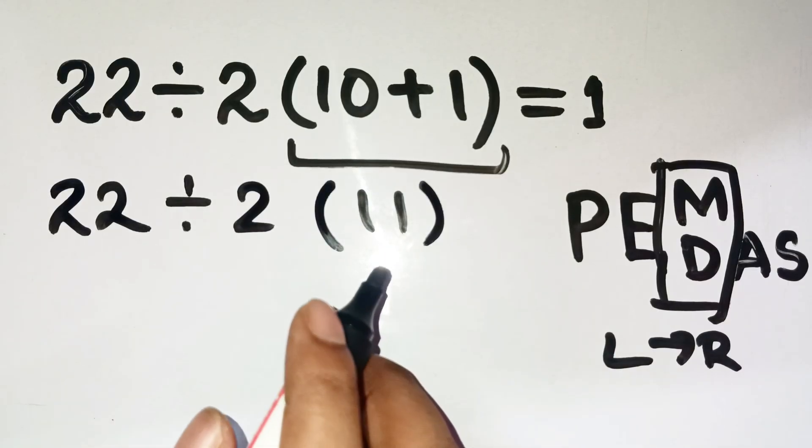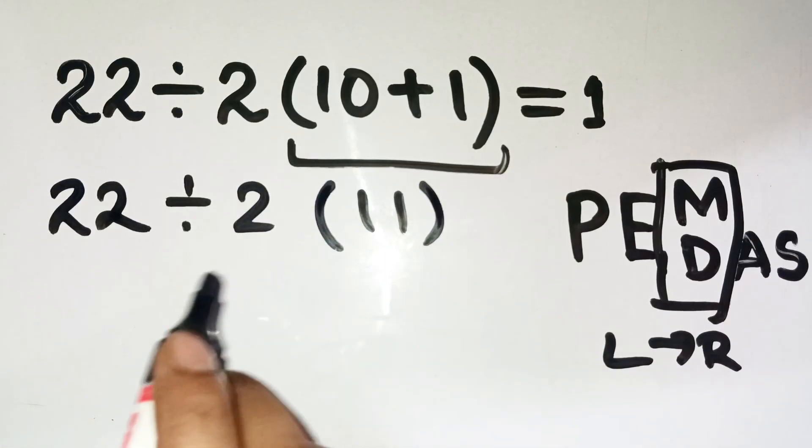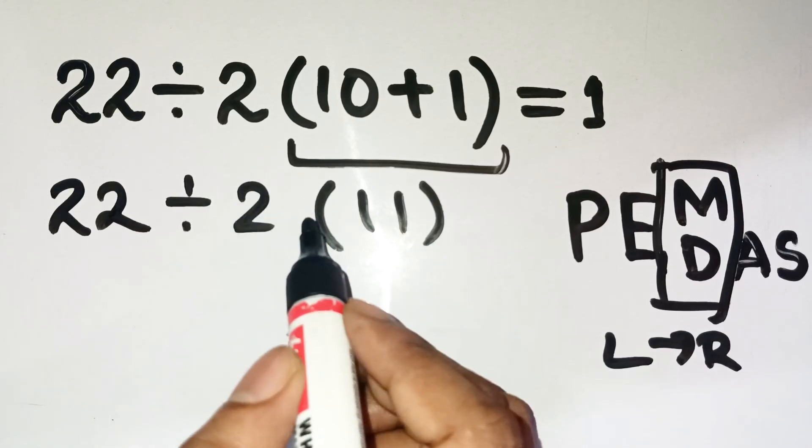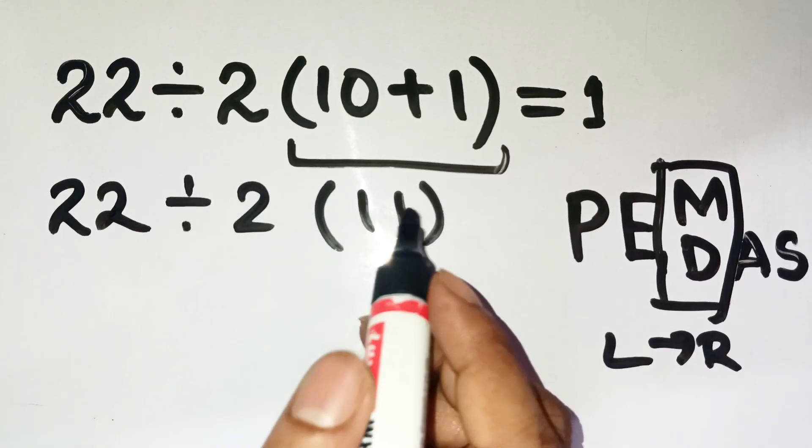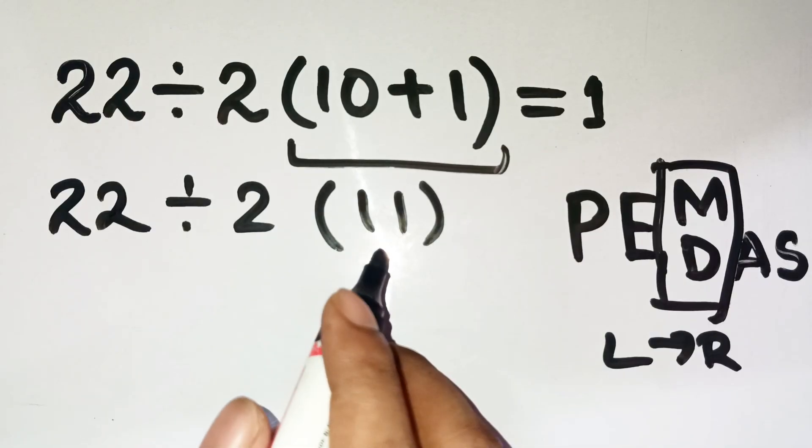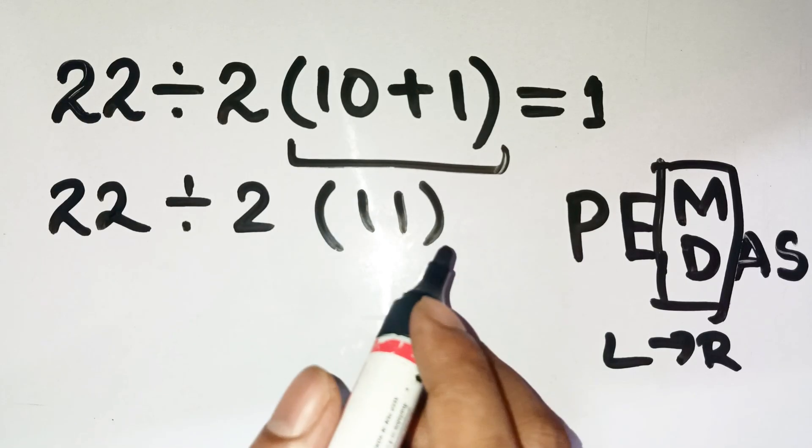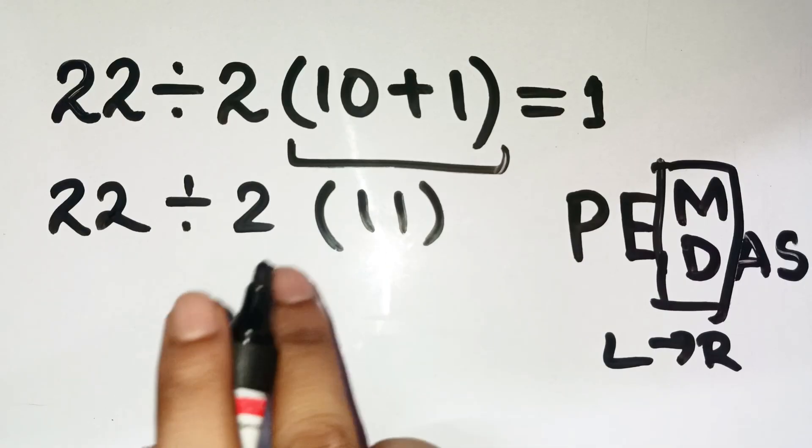And here's where the confusion begins. Some people read 2, open parenthesis, 11, close parenthesis, as 2 times 11 stuck together, like a single block. But in math, that's still just regular multiplication. There's nothing special or higher about it. So, we handle it left to right.